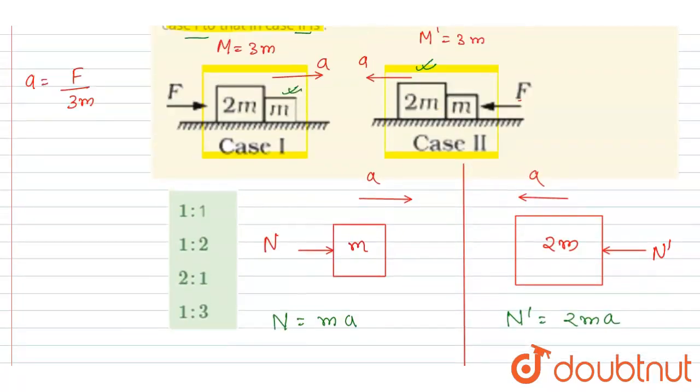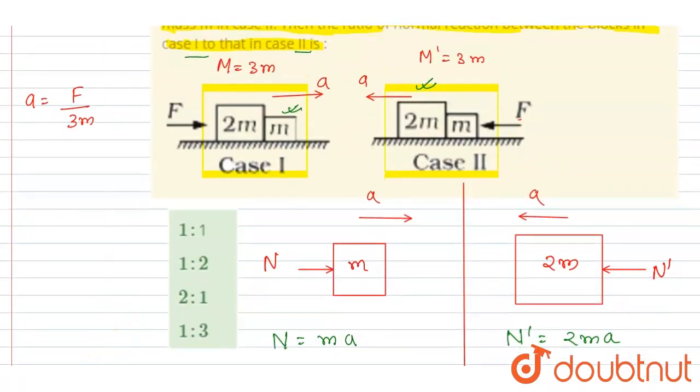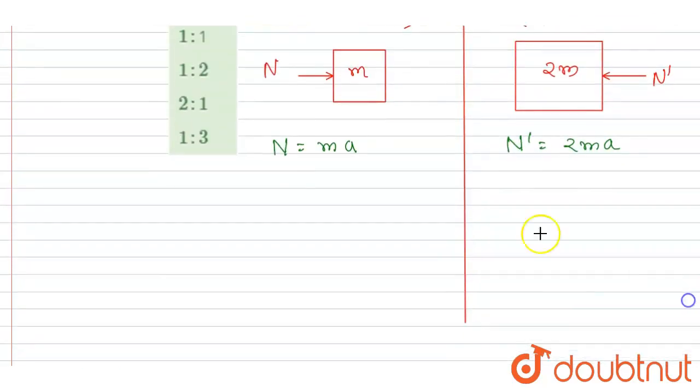So we want this ratio, so no need to put the value here. I will write N by N dash equals ma by 2ma equals half. Now you can check for the option - half is this, B is the correct option.